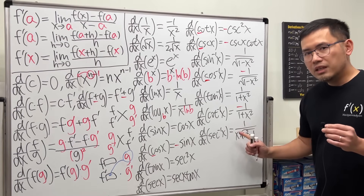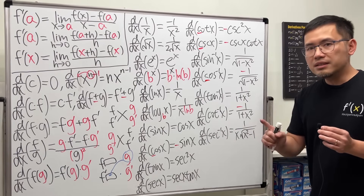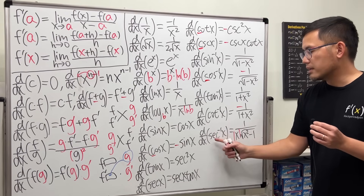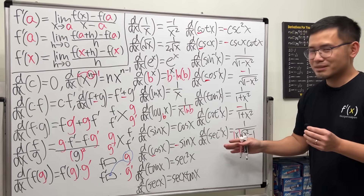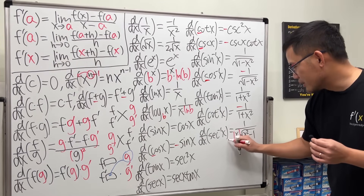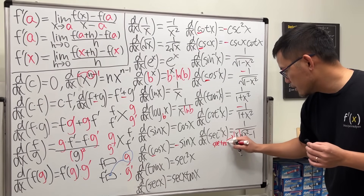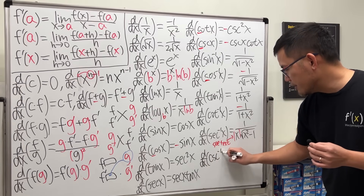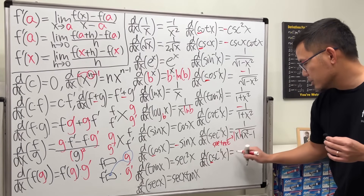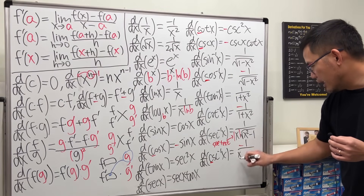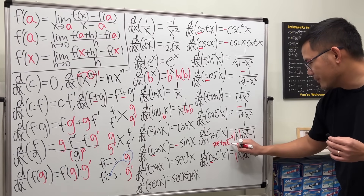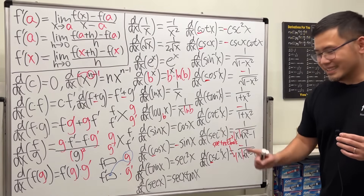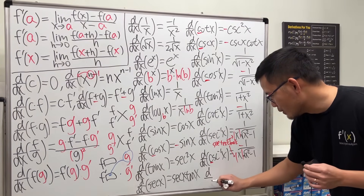Once you know arctan, you know arccot(x): it has a negative derivative, giving negative 1 over (1 plus x squared). For inverse secant, arcsec(x): the derivative is 1 over (x times the square root of x squared minus 1) — note x squared goes first, then minus 1, the opposite of arcsin. Depending on your textbook (such as James Stewart's), you may see an absolute value around x. The co-function arccsc(x) has the same form but negative, again depending on your textbook.